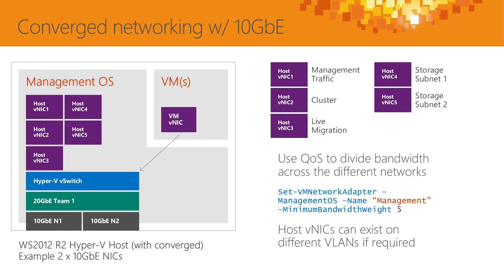How do we give the live migration network enough resource compared to the cluster network, which only needs to be a heartbeat? How do we allocate bandwidth efficiently from the 20 gig available? That's where we use QoS — either in software or hardware. Host VNICs can be on different VLANs. The QoS policy is very easy to establish and can be delivered through System Center. Think about 10 gig NICs — they're not as expensive as they used to be. Weigh up two 10 gig NICs versus 12 ports of 1 gig plus extra switches; it may actually be less expensive. Make sure those NICs are RDMA-capable.